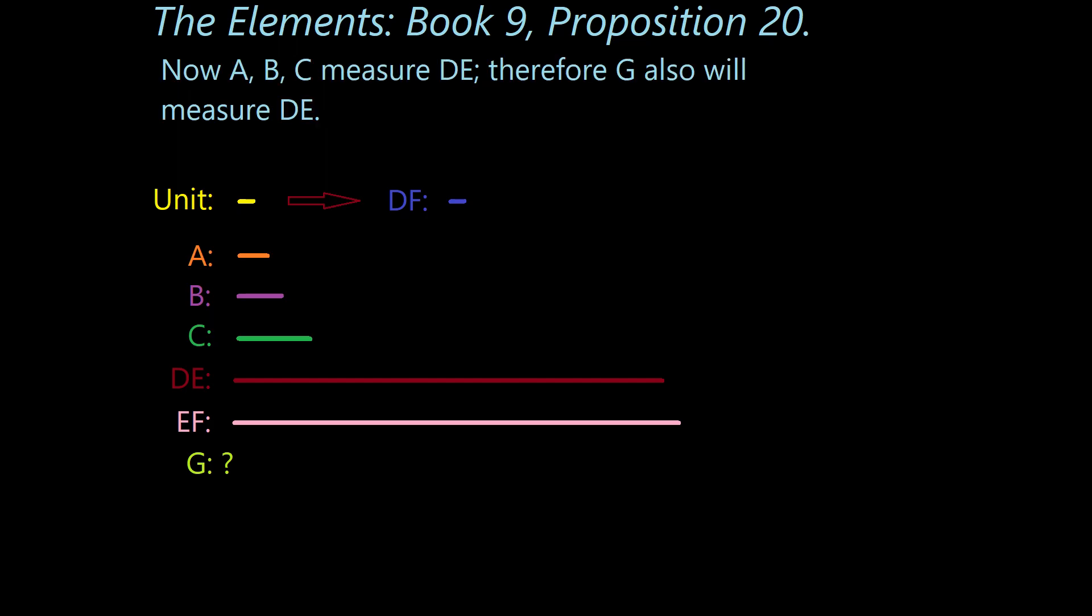Now A, B, C measure DE. Therefore, G also will measure DE. And this again makes perfect sense. If G is the same as A, and A is a factor of DE, then G is also a factor of DE. And that would be true if G is the same as B or C as well.